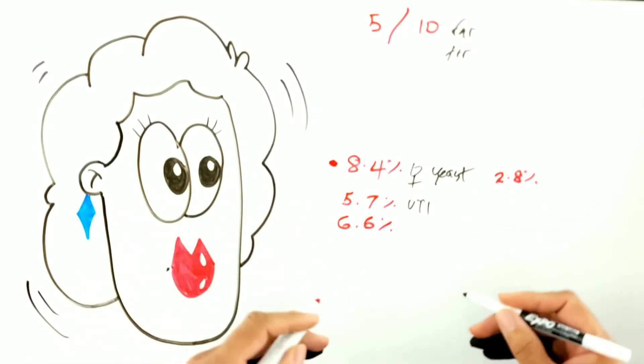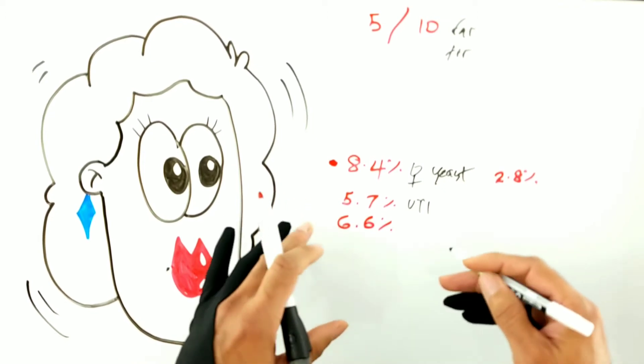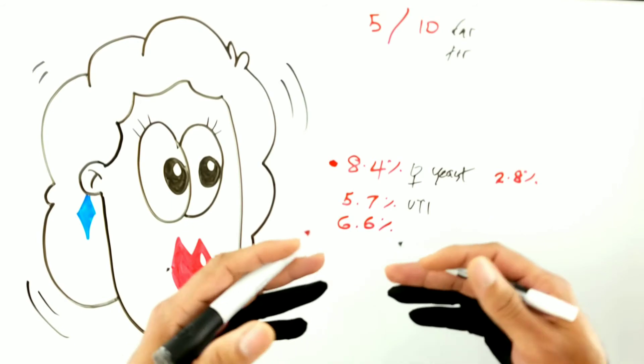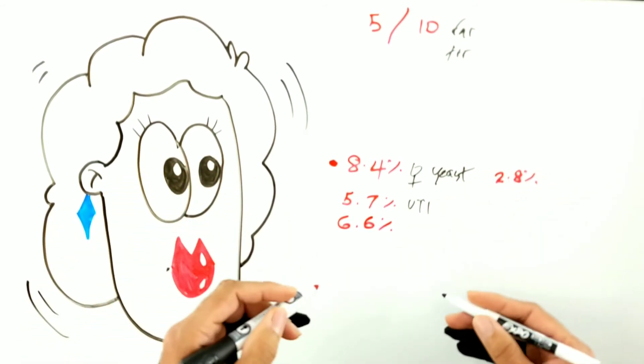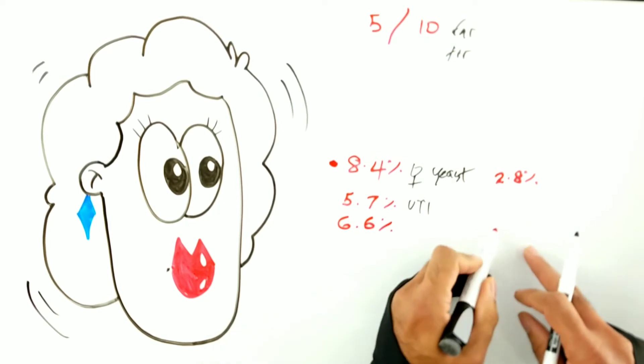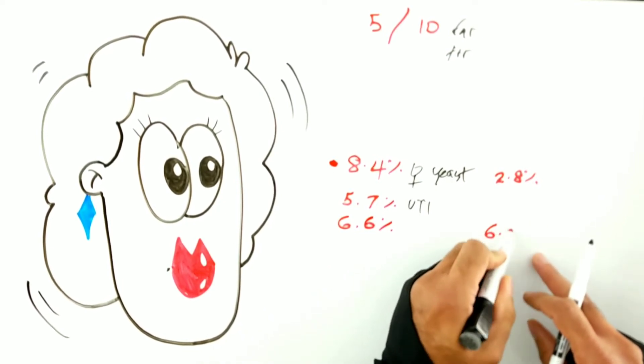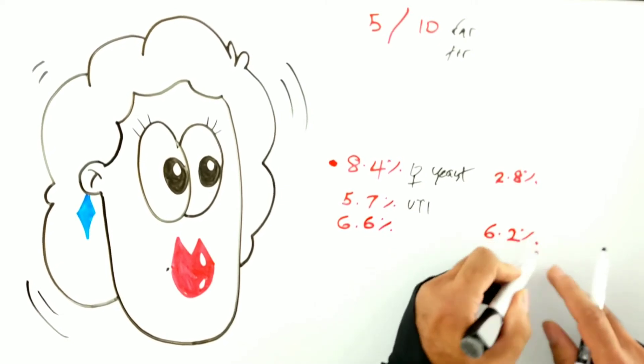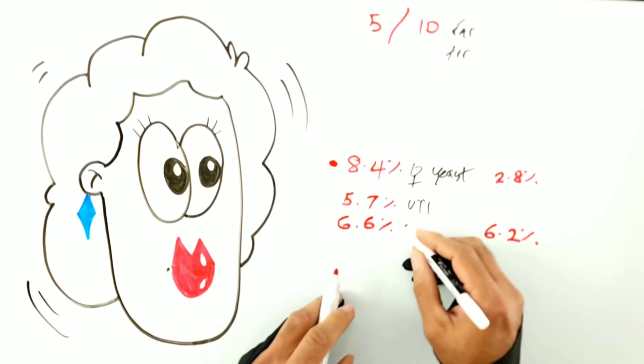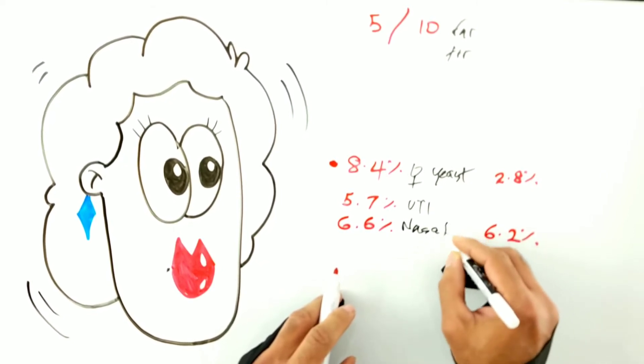And I thought that was kind of strange because this drug really shouldn't have anything to do with the respiratory epithelium. So when I drilled down into it a little further, what I realized is that when you look at placebo - people just taking a sugar pill - the incidence of people complaining of nasal symptoms in them was 6.2%.